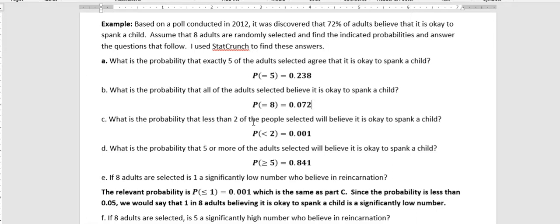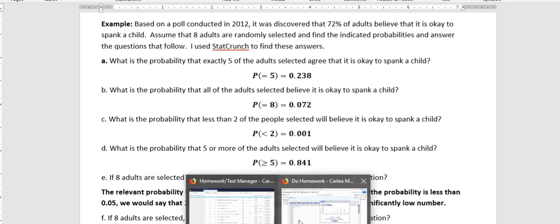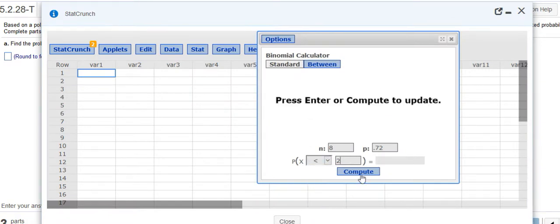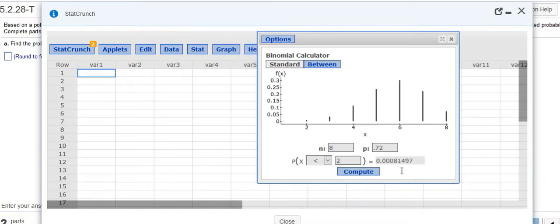What is the probability that less than two of the people selected will believe it is okay to spank a child? So if you want less than two, you're going to come over here and say less than two, and then hit compute. And that looks like 0.0008 rounded up would be 0.001. That should make sense to you because 72% should be, we should be finding that.